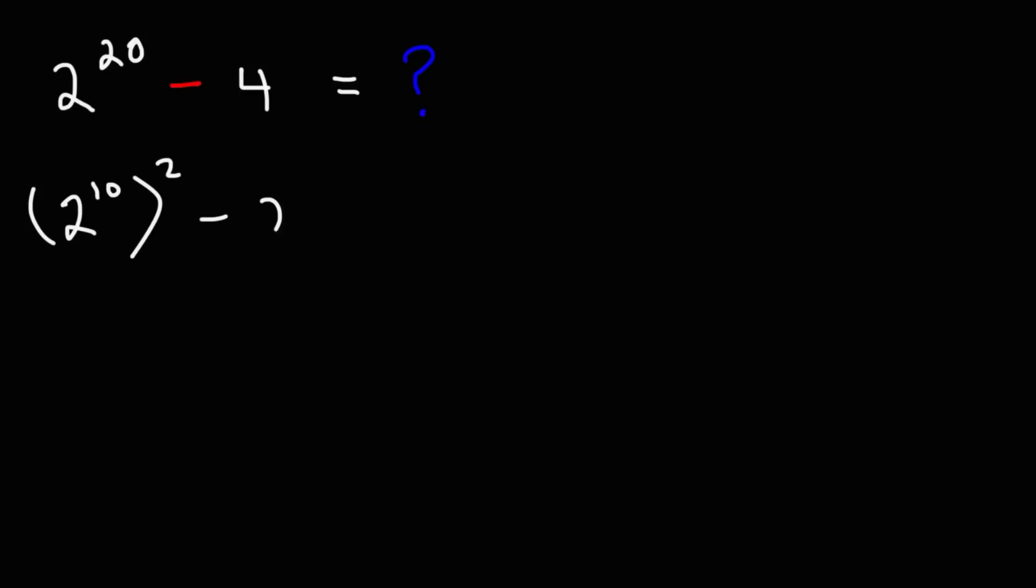4 we can write as 2 squared. Now notice that we have a difference of two perfect squares. Whenever you see a situation like that, you could use this formula: a squared minus b squared is equal to a plus b times a minus b.